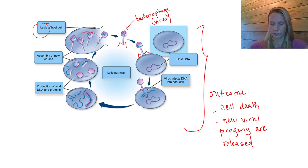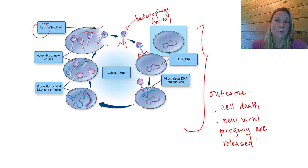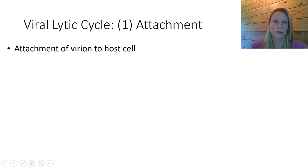Now we're going to talk about how this process occurs in animal cells — how this would occur in a virus that invades and infects animal cells, human cells for example. It follows a very similar step-by-step strategy, and we look at this lytic cycle in terms of six stages. We will look at the viral lytic cycle with an emphasis on double-stranded DNA viruses, and then we'll talk about RNA viruses in the next lecture videos.